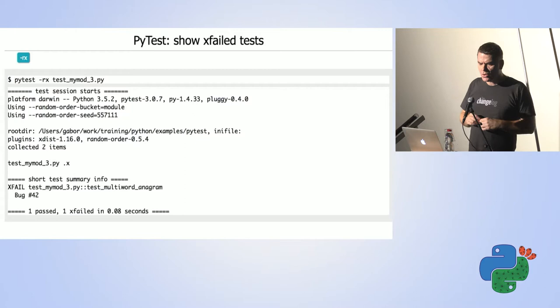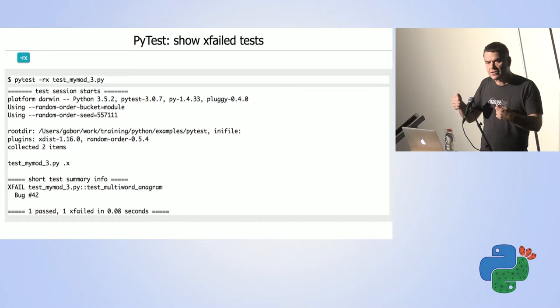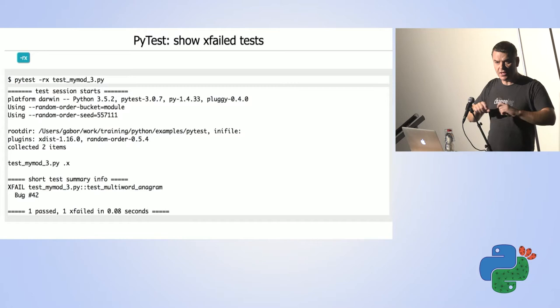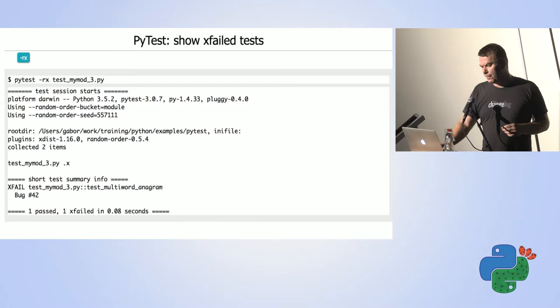You can use the '-r -rx' flag for PyTest to see which tests were expected to fail. It adds an additional report showing the xfail test name and the reason, where you can see the bug number. It's quite useful.